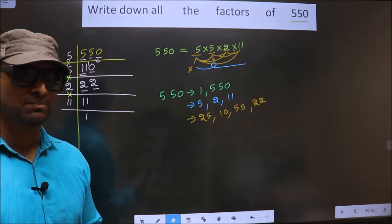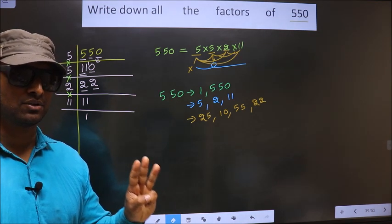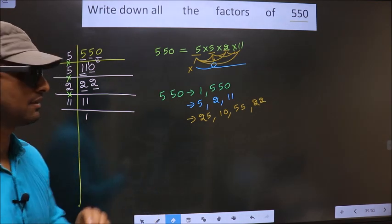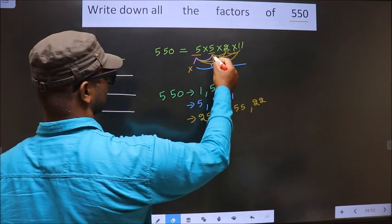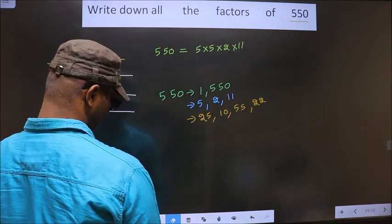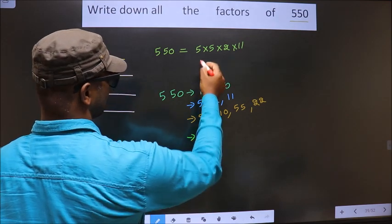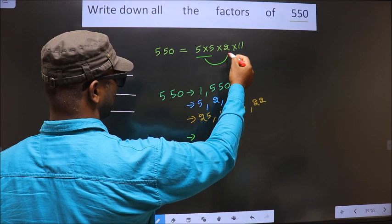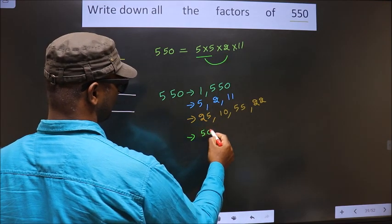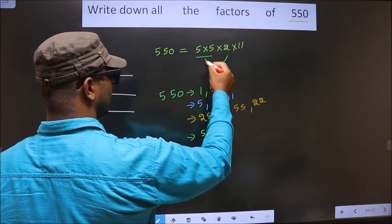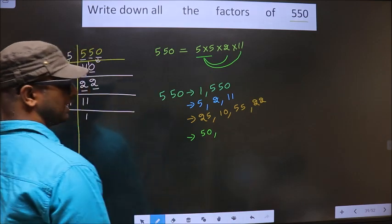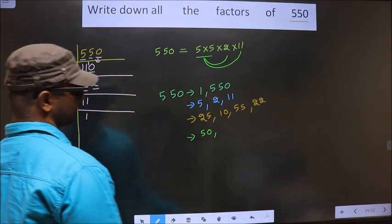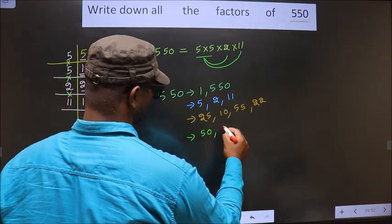Now you take the combination of 3 numbers. First I fix these 2 numbers. 5 into 5 is 25, combine with 2, 25 into 2 is 50. Now I combine with 11, 25 into 11, we get 275.